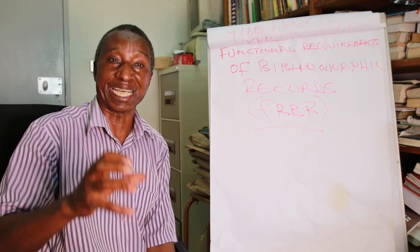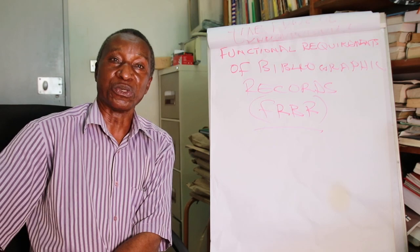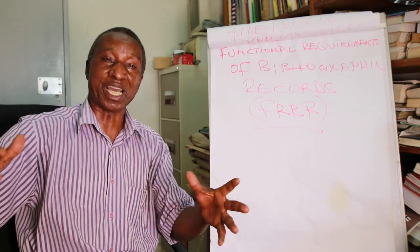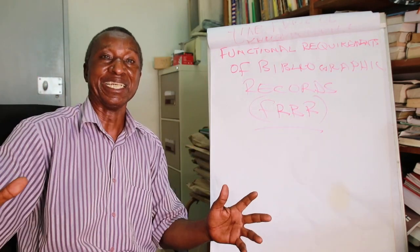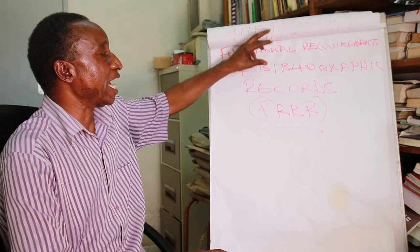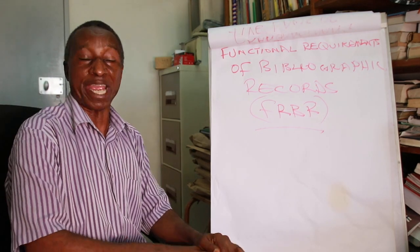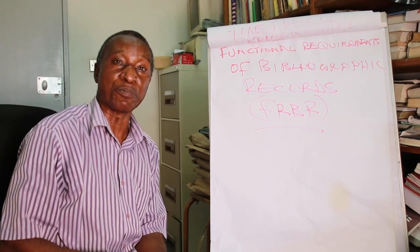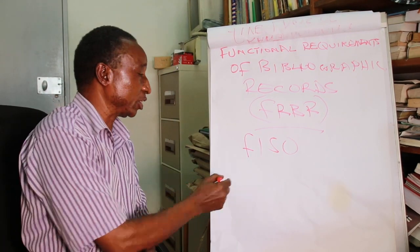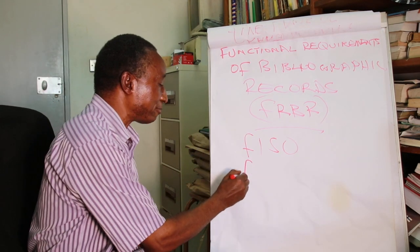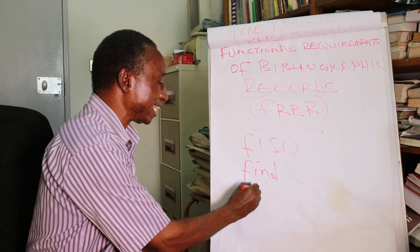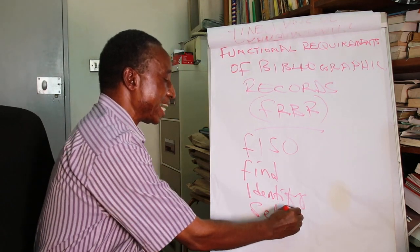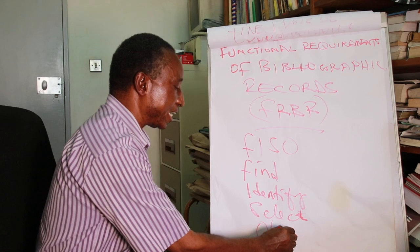A bibliographic record is a record created when you are processing or creating a catalog — a catalog is essentially a set of records. IFLA has defined the strict requirements for any good catalog, whether in electronic form or in print. In short, these requirements are four, known as FISO: F stands for 'to find,' I stands for 'to identify,' S stands for 'to select,' and O stands for 'to obtain.'